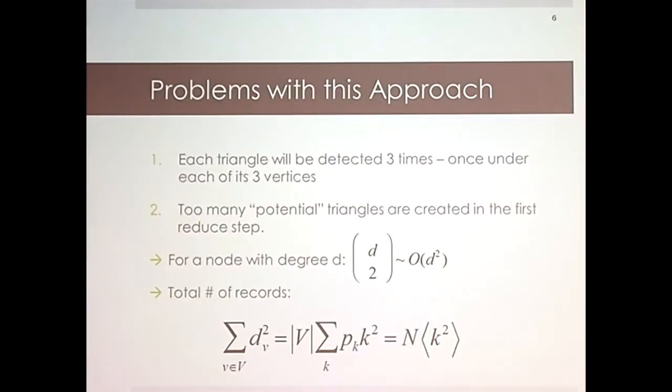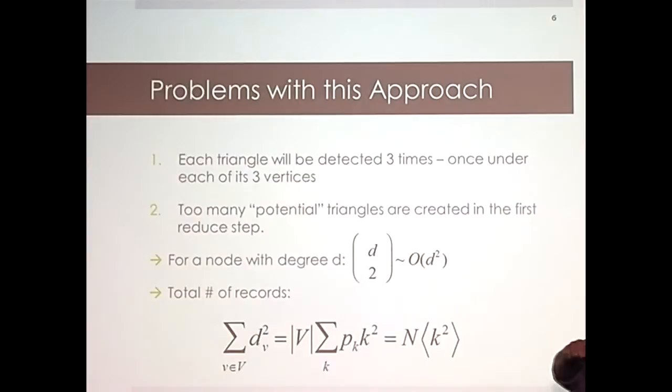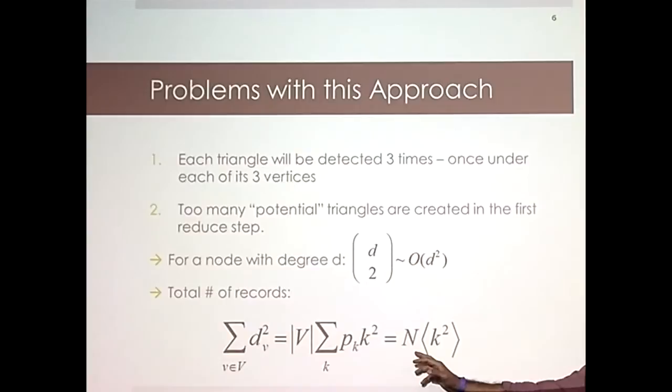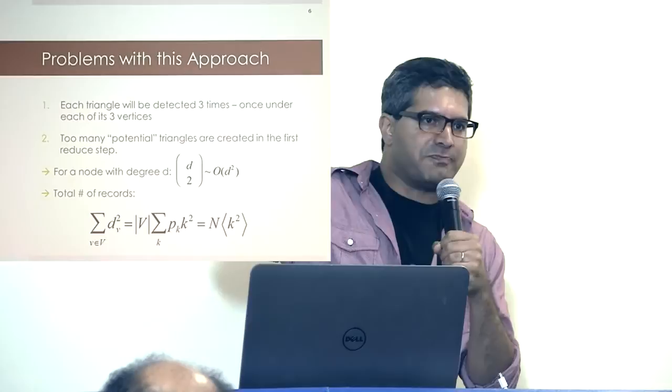That straightforward implementation: if you ask how many intermediate triangles were created, the math gives you n times the variance of the degree distribution. If the graph has a degree distribution where pk is the probability a random node has degree k, the total number of potential triangles is n times that variance. Many real-world networks — all the social graphs — are really heavy-tailed, meaning there's a bunch of highly connected nodes and the variance-to-mean ratio is very high. That's a hallmark of a lot of these graphs.